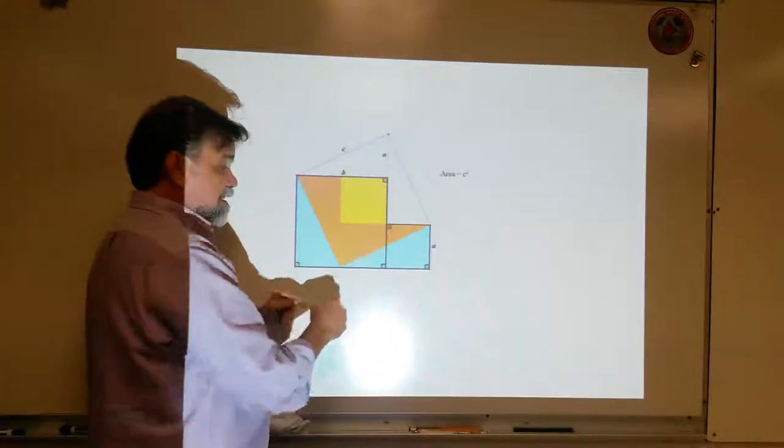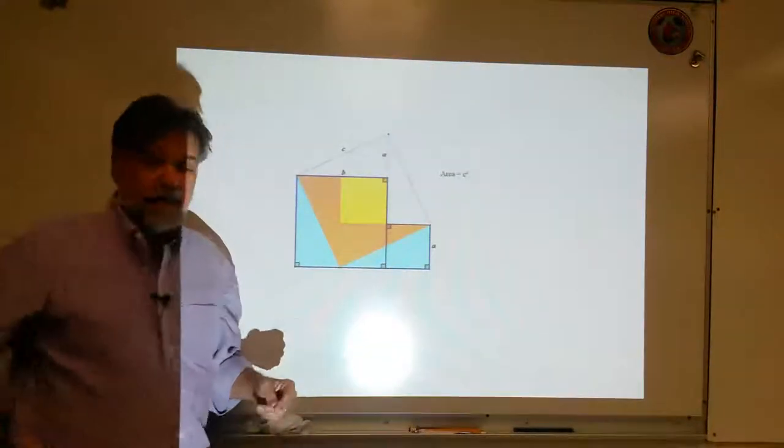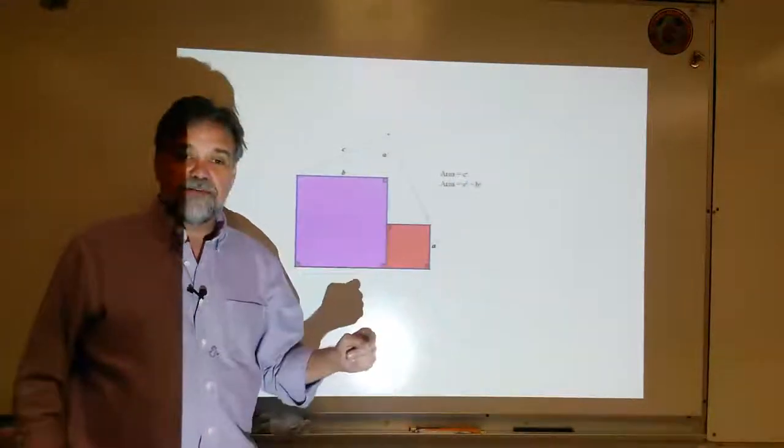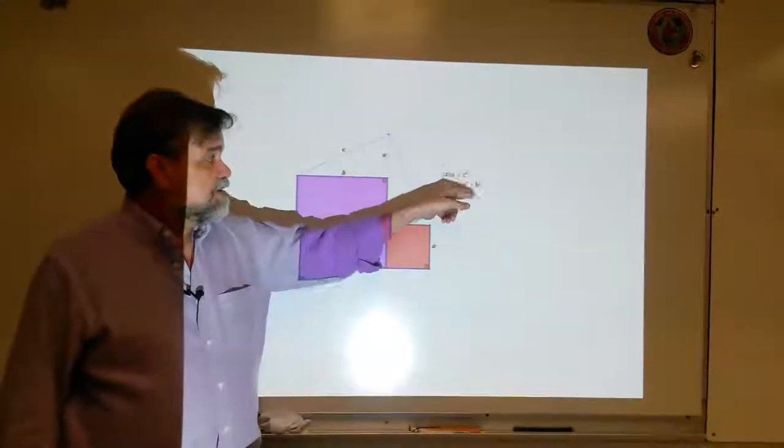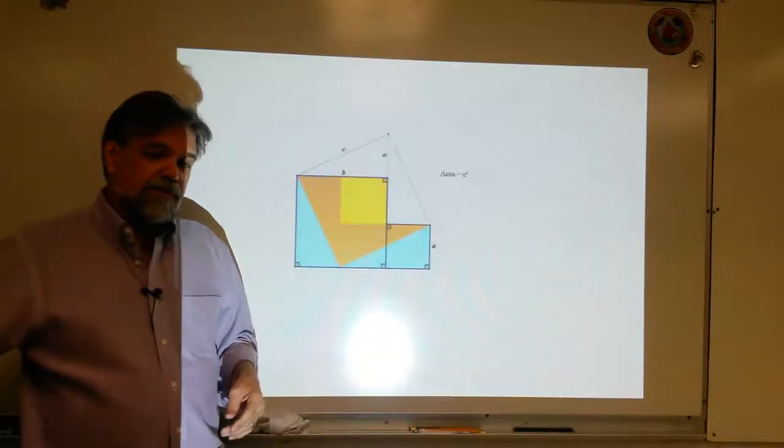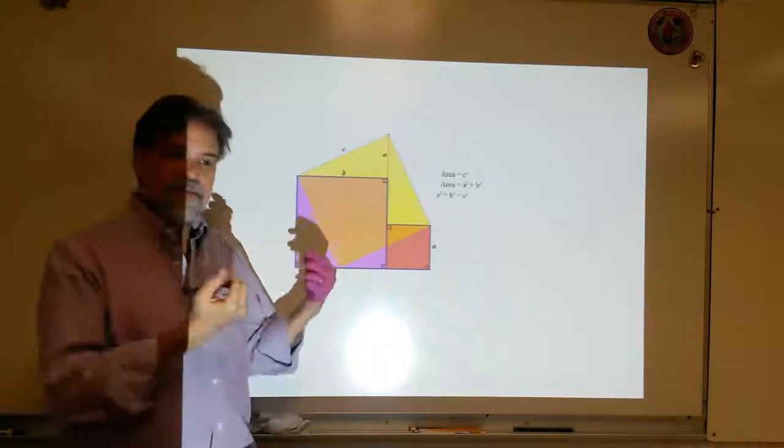And what do you end up with? You end up with a square that is B on all sides and a square here that is A on all sides. And what that means is, the area has to be A squared plus B squared. And if the area is C squared and the area is A squared plus B squared, that means that A squared plus B squared must equal C squared. And there's the theorem.